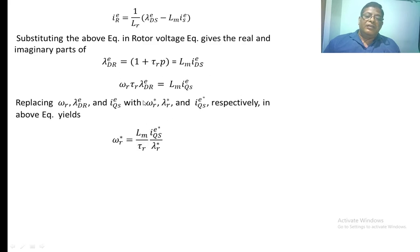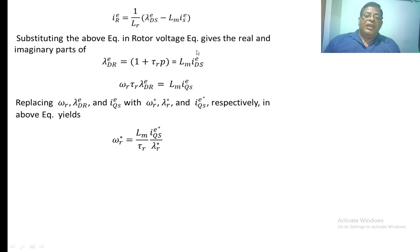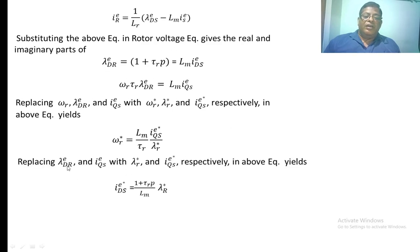Now in this equation, if we substitute omega_r with omega_r_star, lambda_dr_e with lambda_r_star, and i_qs_e with i_qs_e_star, we can find the value of omega_r_star, which equals (L_m / tau_r) * (i_qs_e_star / lambda_r_star). Again substituting lambda_dr_e with lambda_r_star and i_ds_e with i_ds_e_star, we find i_ds_e_star = (1 + tau_r * p) / L_m * lambda_r_star.